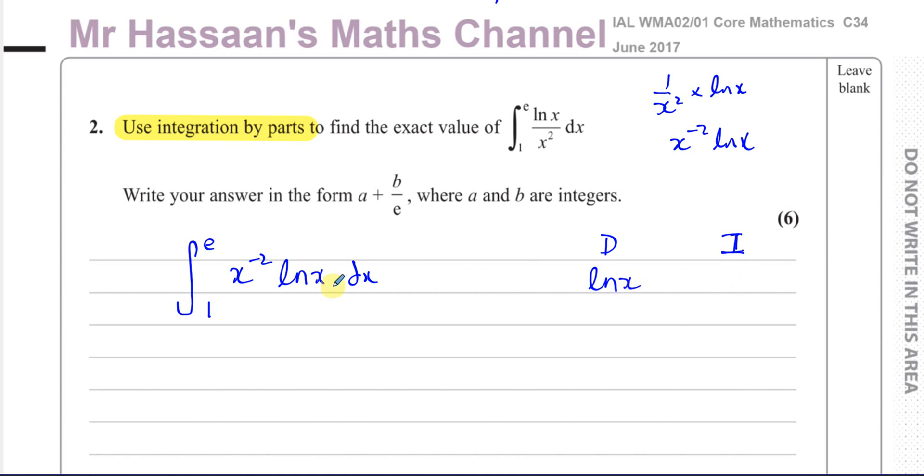Some people use this mnemonic, LATE, where this stands for things which are in log form, then algebraic form meaning polynomial form, then trigonometric form, then exponential form. I personally don't like to memorize such things, because if you mess up your memorizing, you won't know what's happening. It's better to understand how things work. The only exception is when you have ln(x) - we have to use it as a differential.